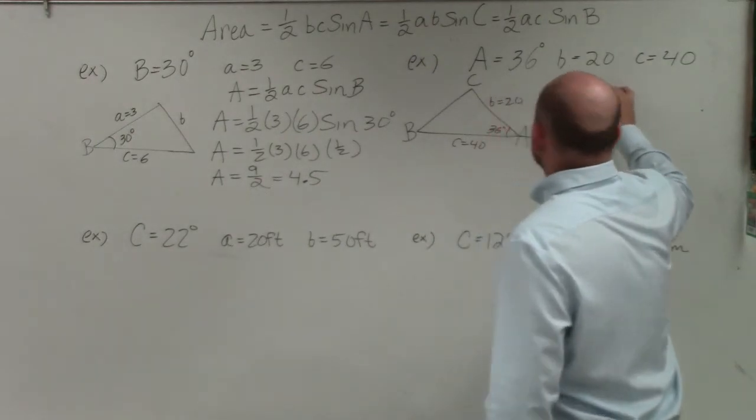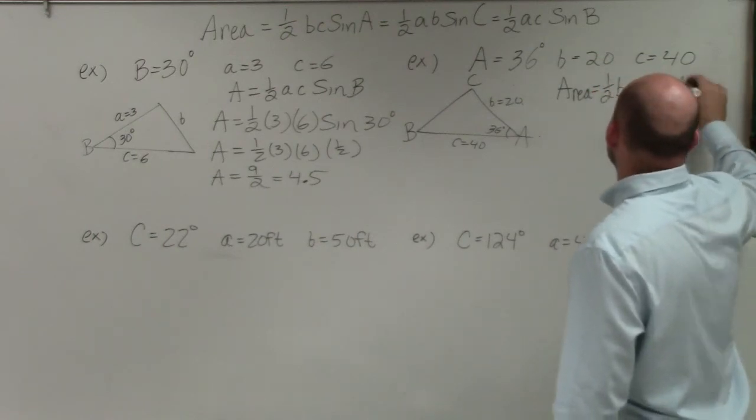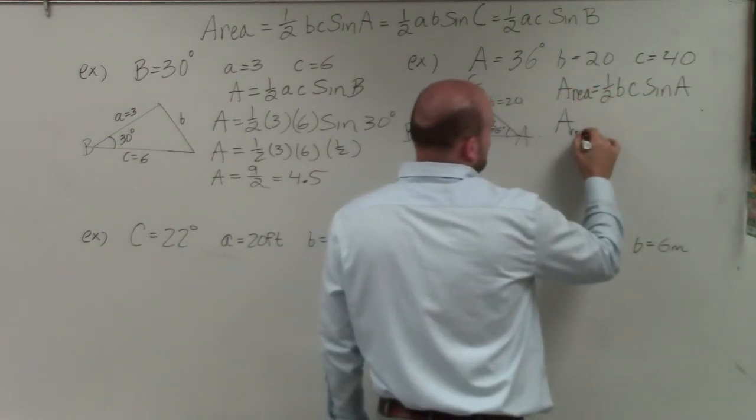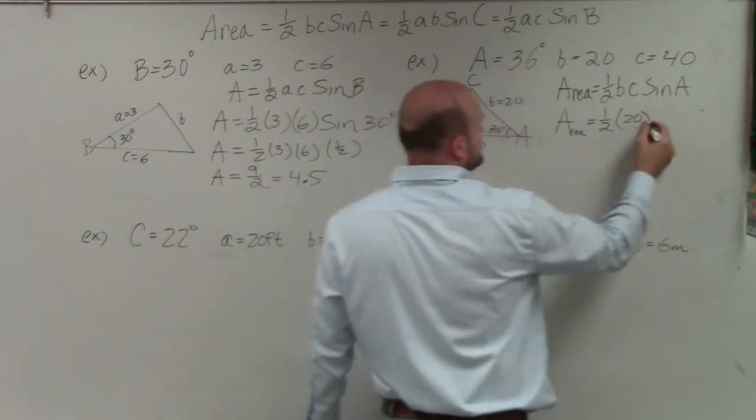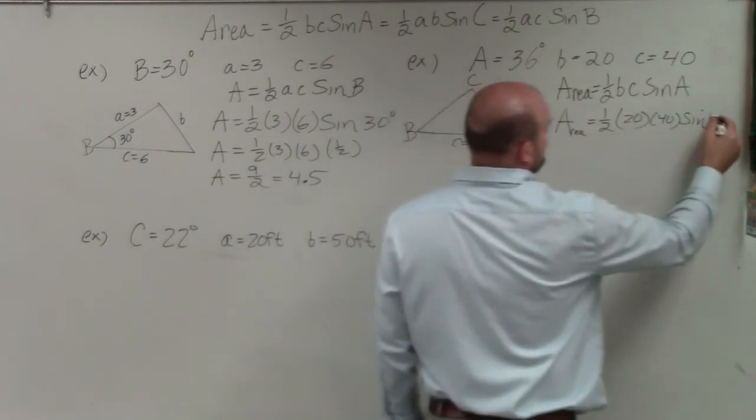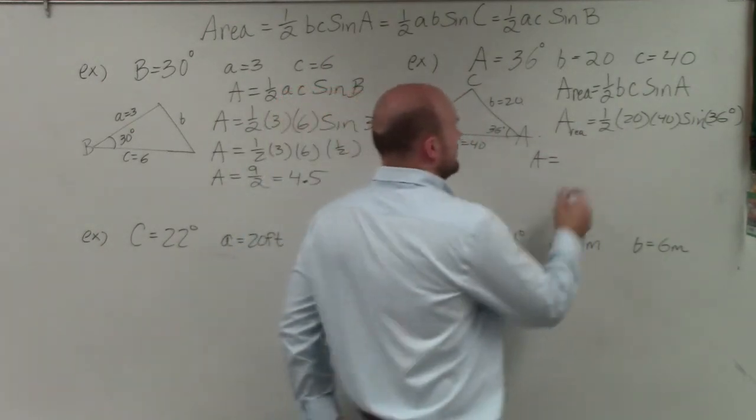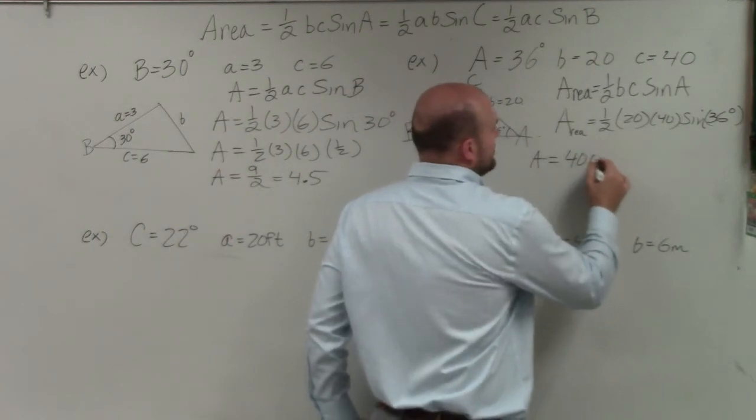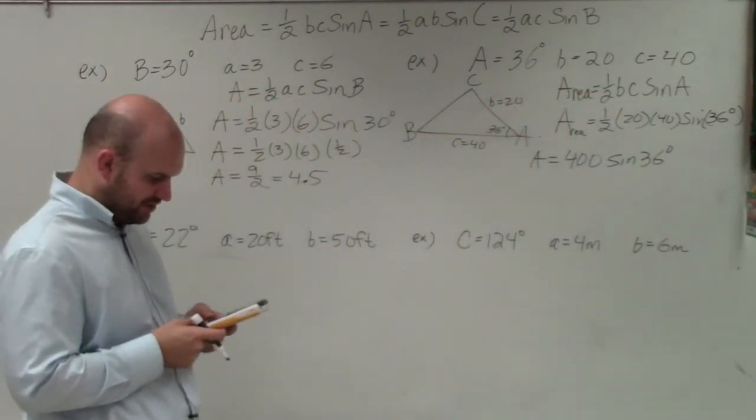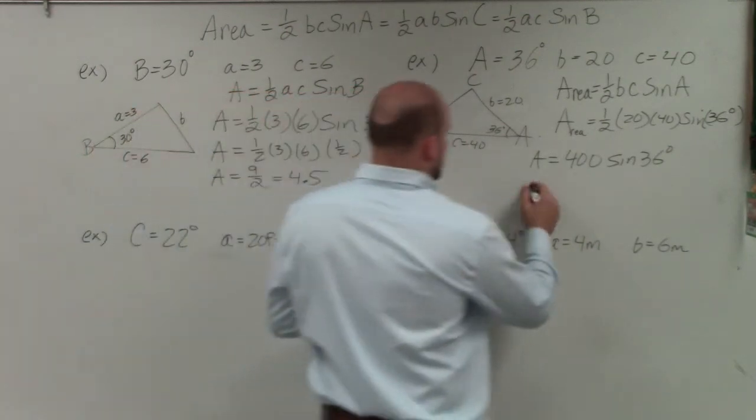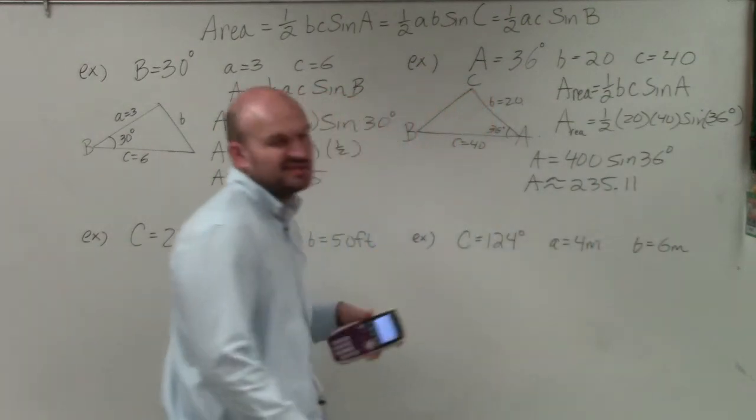So you can see we're given angle A, so therefore I'm going to use this formula. So the area is going to be 1/2 times B times C times the sine of A. A is equal to area is 1/2 times B, which in this case is 20, times C, which is 40, times the sine of 36 degrees. So therefore area equals, 1/2 times 20 is 10. 10 times 40 is going to be 400, and then times the sine of 36 degrees. I'll just do 400 times the sine of 36, and I get area is going to be approximately 235.11 units squared.